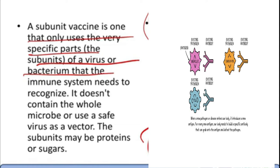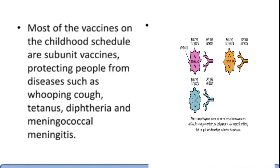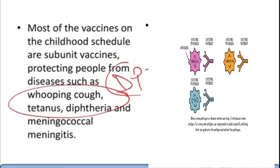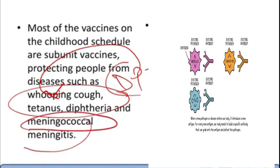The subunits may be proteins or sugars. Most vaccines on the childhood schedule are subunit vaccines, protecting from whooping cough, tetanus, and diphtheria. DPT is a very famous and useful vaccine given to children — Diphtheria, Pertussis, and Tetanus. Pertussis is nothing but whooping cough. This subunit approach mechanism is used in diphtheria, whooping cough, tetanus, and meningococcal meningitis as well.